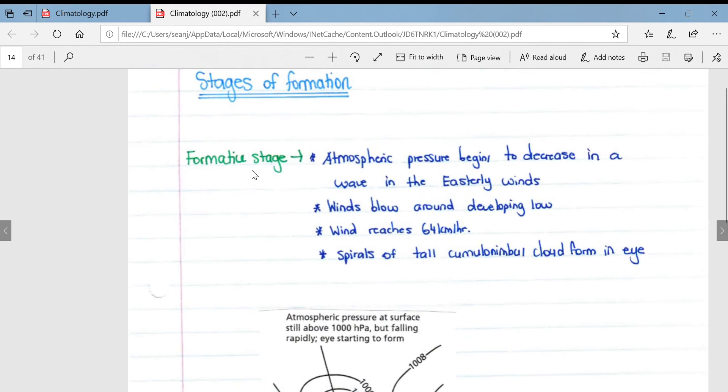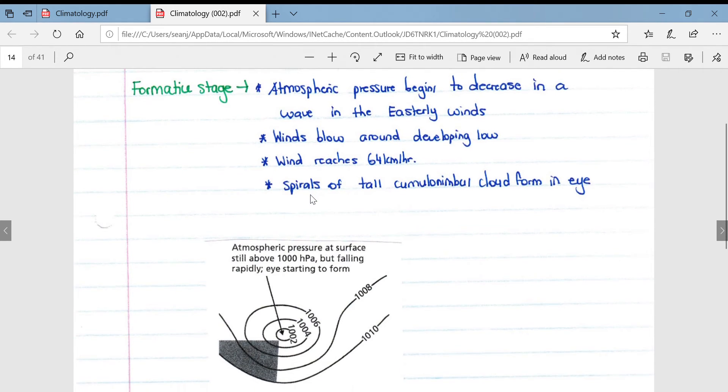If we look at the stages of formation, the first stage is obviously the formative stage. Atmospheric pressure begins to decrease in a wave in the easterly winds, as we can see on this diagram here. The winds blow around a developing low pressure and the wind speed reaches 64 kilometers per hour. Spirals of tall cumulonimbus clouds form an eye, and obviously the eye is a very characteristic part of a tropical cyclone.